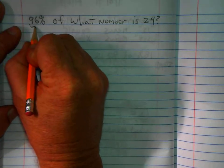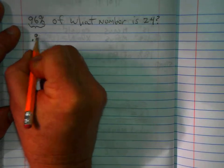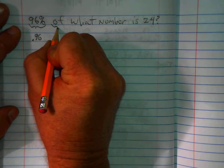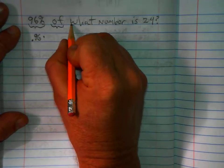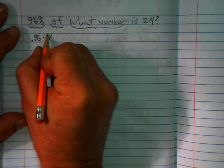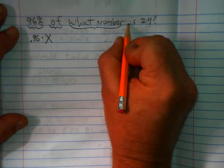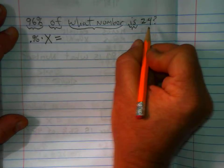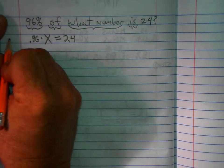96% can be written as .96. Of in math means multiply. What number can be written as a letter: X, Y, Z, N. Is, in math, means equals. And 24 is just simply 24. So this is step one.